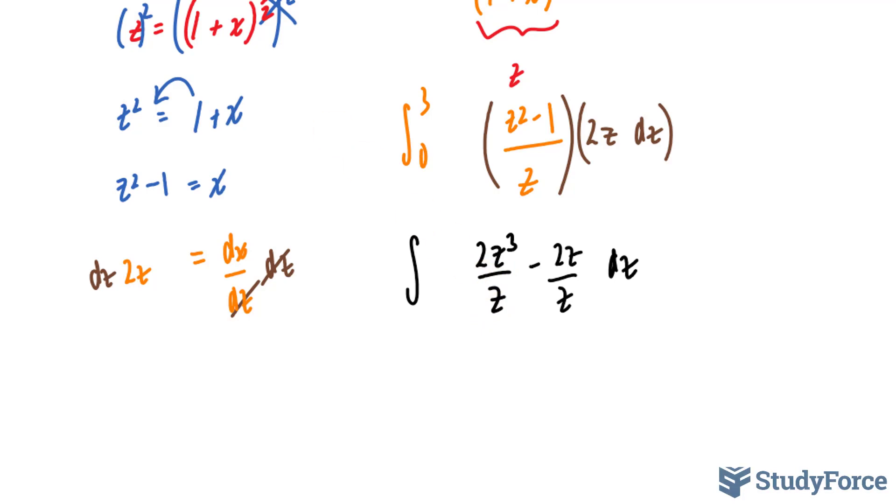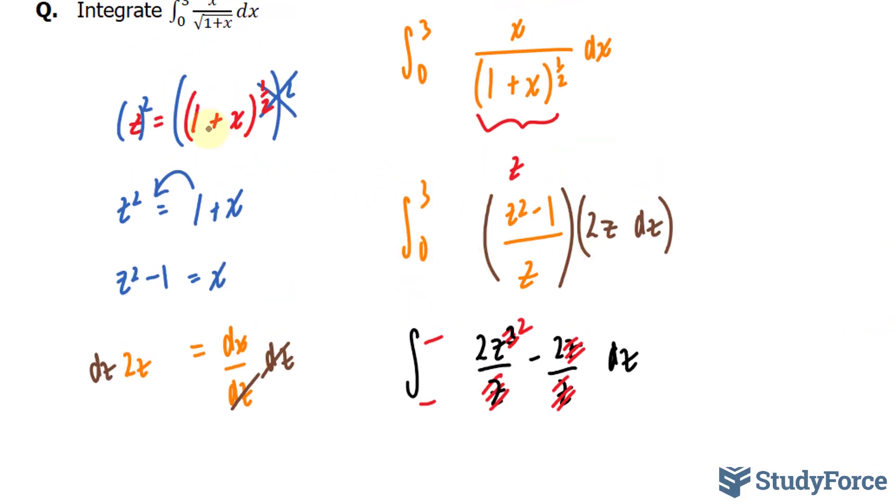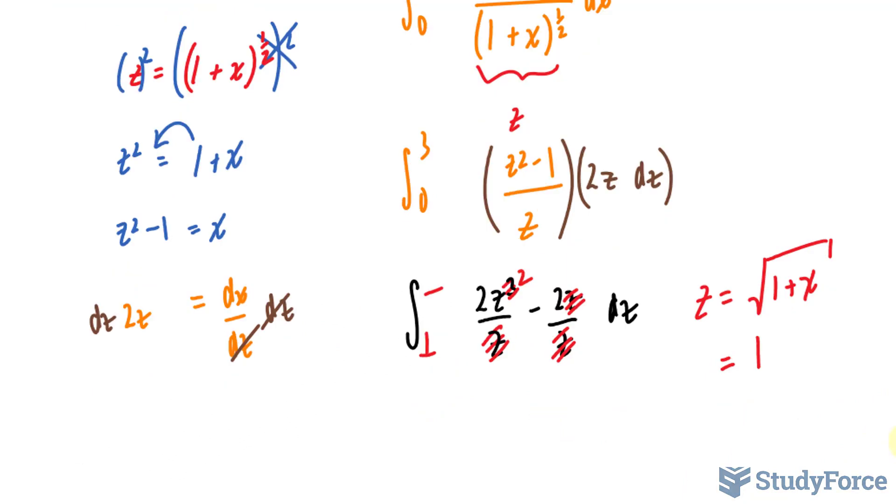This z and one of these cancel out. This z cancels out with this one. And at the same time, I'll find out the brand new bounds. I can do that by substituting 0 and 3 into what I originally set z equal to. z was originally set equal to the square root of 1 plus x, or 1 plus x to the power of half. Substituting 0 into here, I end up with the square root of 1, which is 1. And substituting 3 into here makes it 4. The square root of 4 is 2.